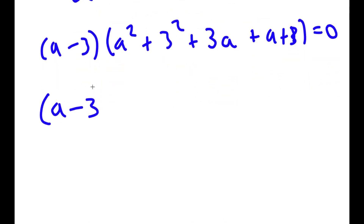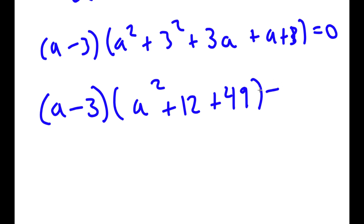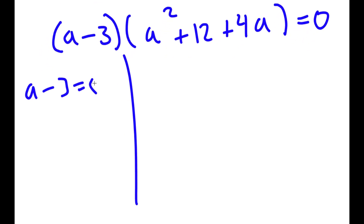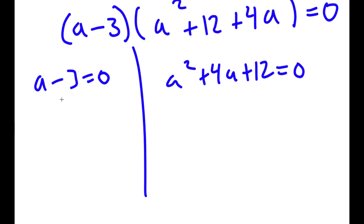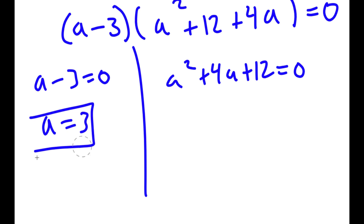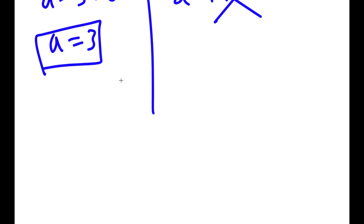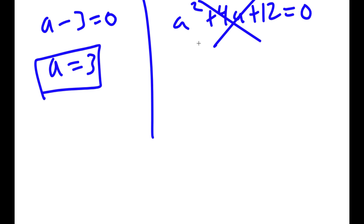I can rewrite this as (a minus 3) times (a² + 4a + 12) equals 0. This gives two equations: a minus 3 equals 0, so a equals 3 — one solution; and a² + 4a + 12 equals 0, which requires the quadratic formula. Using it, you get the square root of a negative number, so there is no real solution there. Therefore a equals 3 is our only solution.